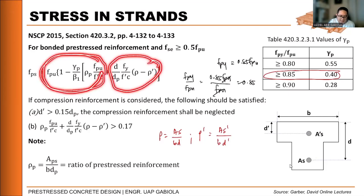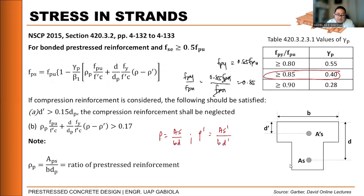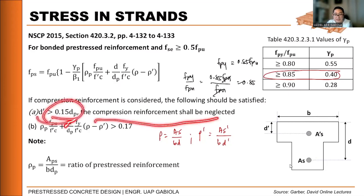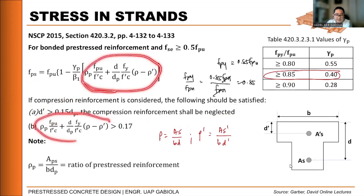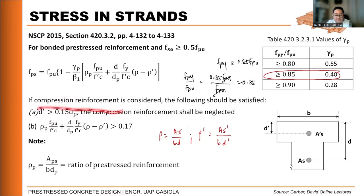If there is no non-prestressed rebar — purely prestressed — we can eliminate those terms, and only the prestress term remains to calculate FPS. If compression reinforcement is considered, the distance D-prime from the center of compression reinforcement to the extreme compression fiber should be greater than 0.15 DP. If this is not satisfied, the compression reinforcement shall be neglected for FPS analysis. Additionally, the term inside the bracket should always be greater than 0.17.